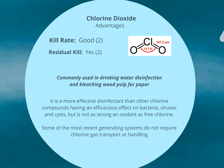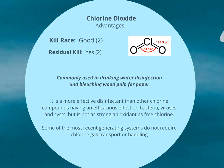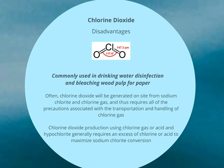Chlorine dioxide has a good kill rate and also has residual kill after application. It's very effective — more effective than chlorine — but it's not as strong an oxidant as free chlorine. Some of the most recent generating systems do not require chlorine gas transport or handling, which makes it safer. However, it's often generated on site and requires all the precautions associated with the transportation and handling of chlorine gas. Chlorine dioxide production using chlorine gas or acid and hypochlorite generally requires an excess of chlorine or acid to maximise sodium chlorite conversion.